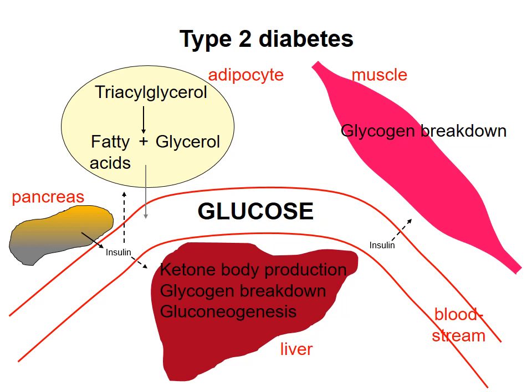Treatment of type 2 diabetes often involves weight loss, exercise, reduction of carbohydrates in the diet, and medication. This concludes the review of energy metabolism in the course.